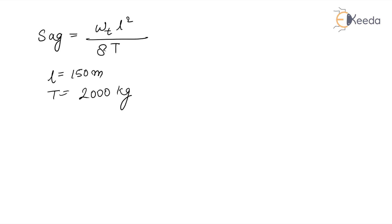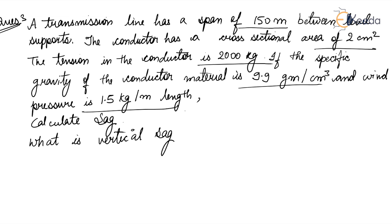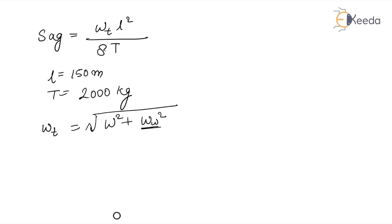We have to find out the total weight of the conductor, WT. The total weight per meter length of conductor is equal to √(W² + WW²). WW is the wind force or wind pressure, which is given as 1.5 kg per meter, so WW = 1.5 kg/m.